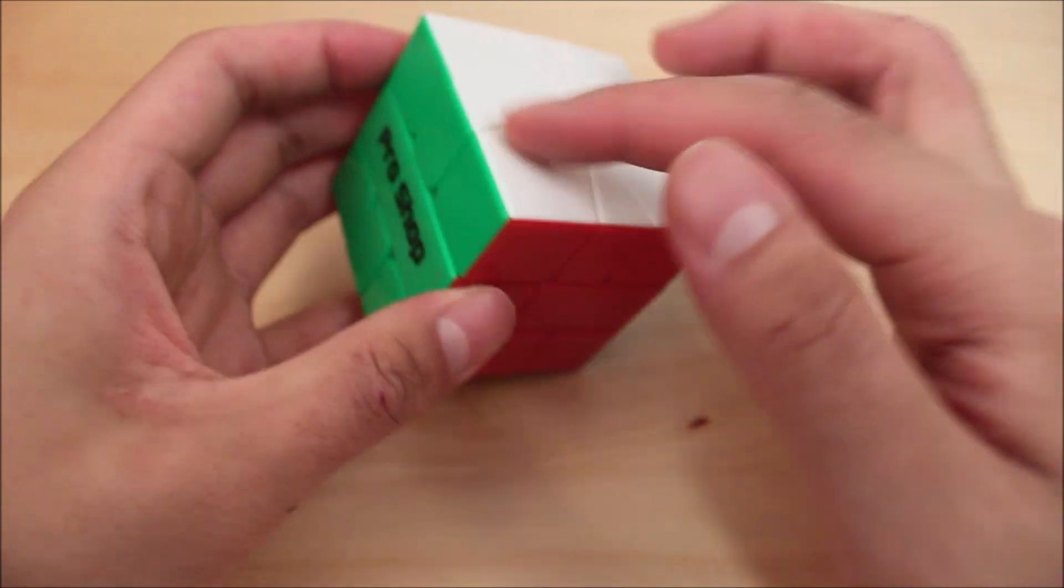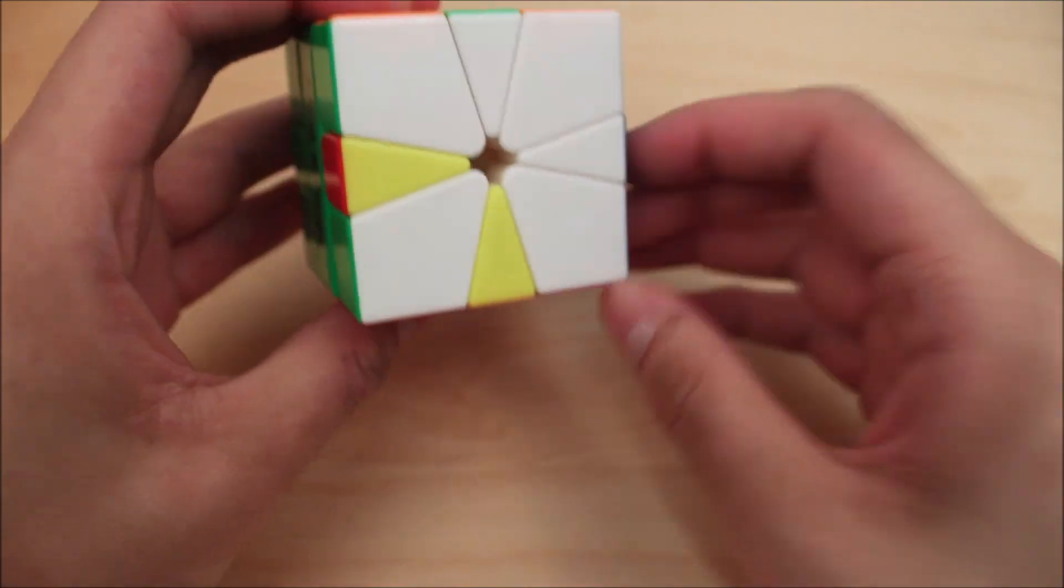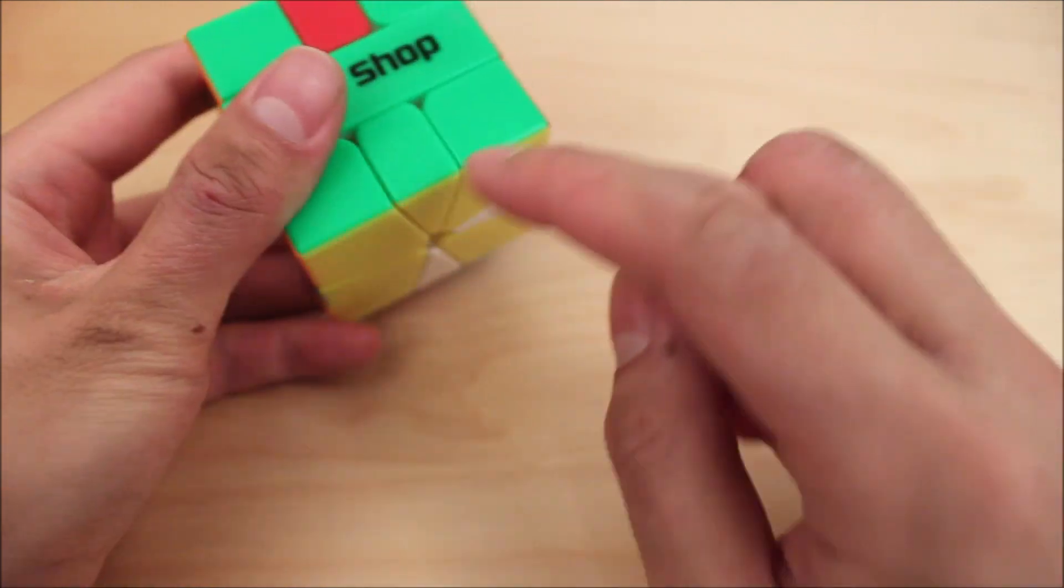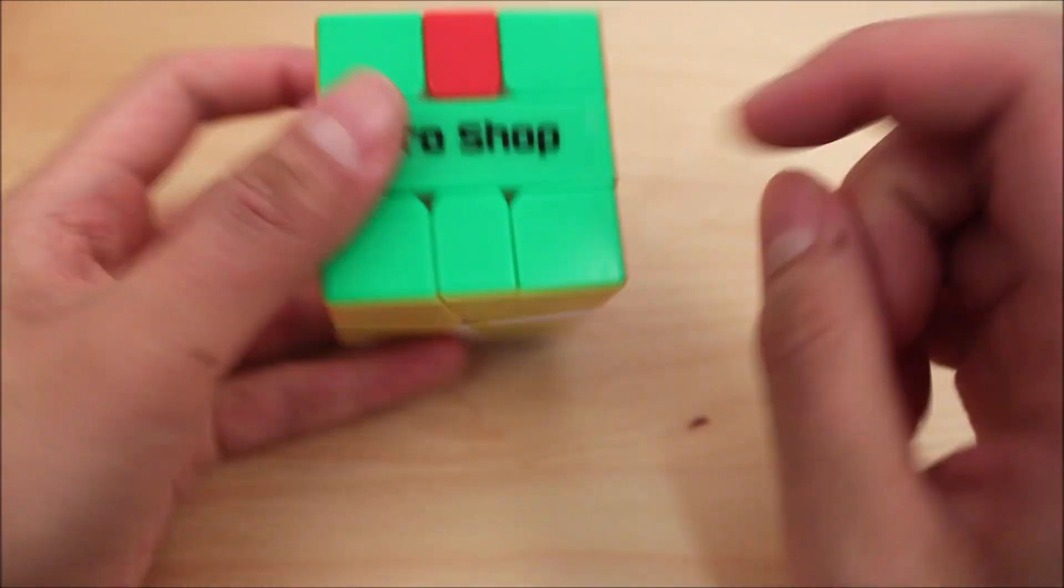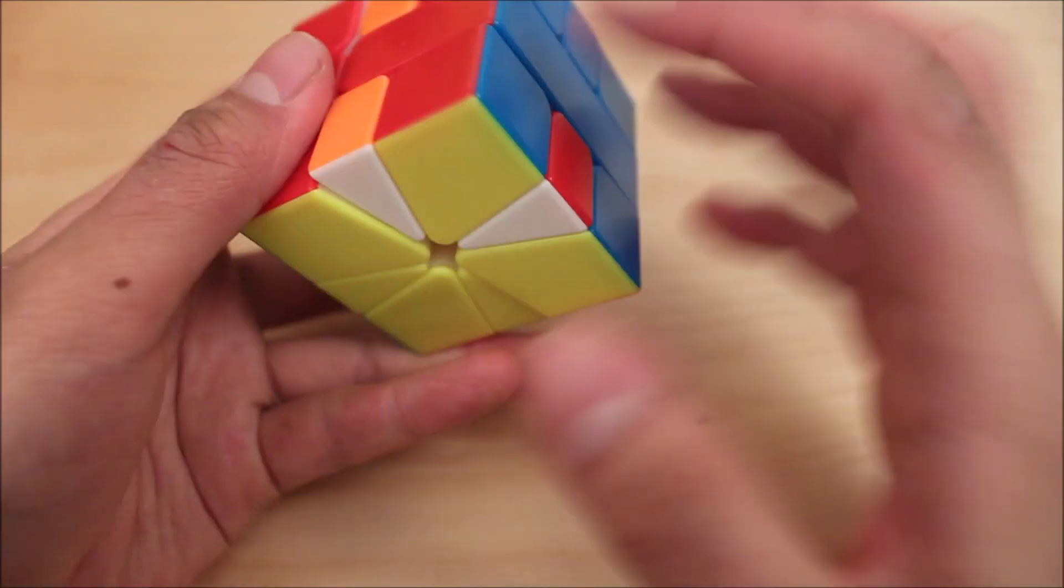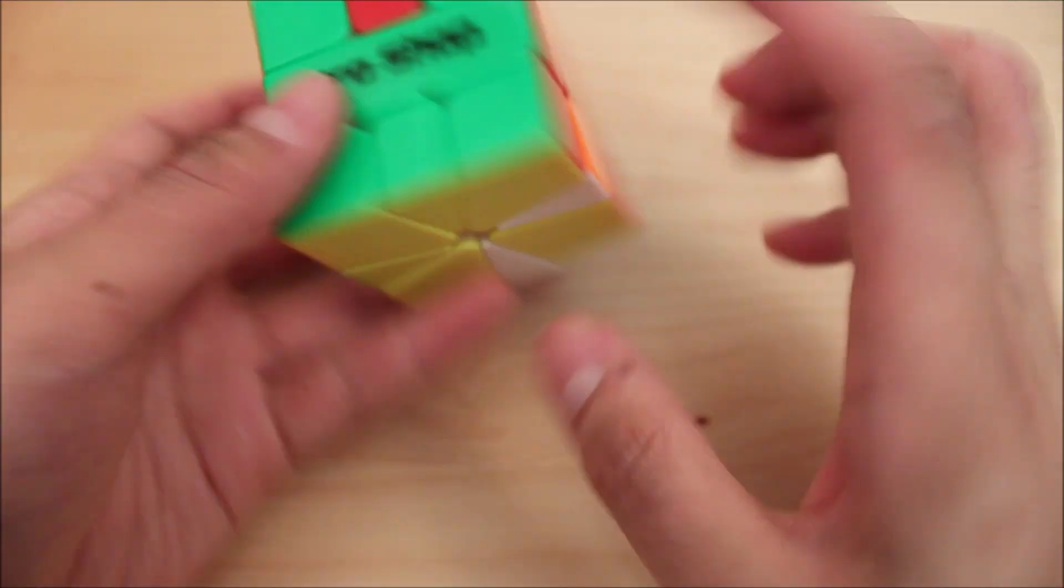Use decent algs that actually preserve a good amount of PBL. For example, this is a pretty common case. This preserves all the corners and the only visible thing pretty much is this edge will be preserved. So after doing EO, I know that this thing will be solved like that.